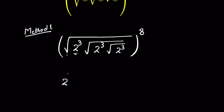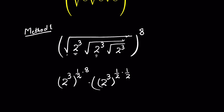So we have 2 raised to the power 3, whole raised to the power 1/2, then raised to the power 8. Then times 2 raised to the power 3 — this 2³ is under 2 square roots, meaning it is raised to the power 1/2, then 1/2 again. Then times 2 raised to the power 3, which is under 3 square roots, so raised to 1/2 times 1/2 times 1/2.